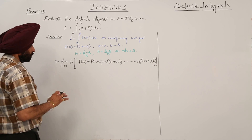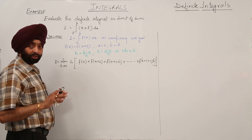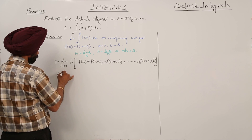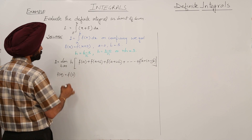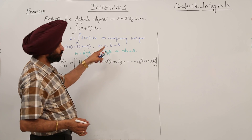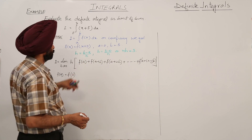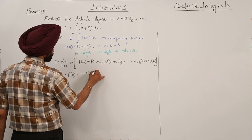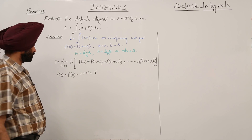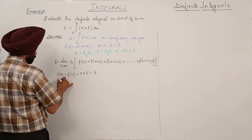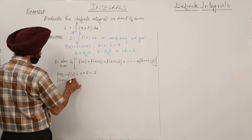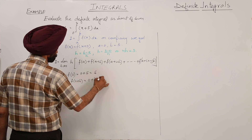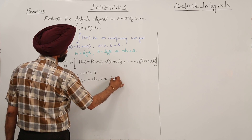Now we have to go according to the theorem. If you are going with the independent terms, that is much better. So just see what I am doing. f(a) is equal to f(0) because a is 0 here in the first term. So this is equal to 0 plus 5, which is equal to 5. f(a+h) is equal to f(0+h), which is equal to 0 plus h plus 5, so we are having h plus 5.